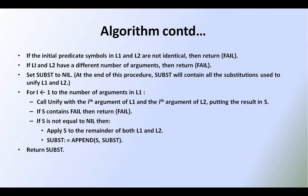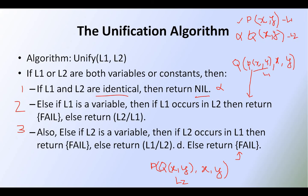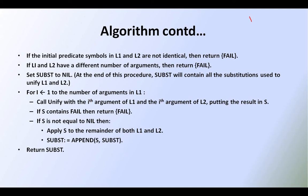The next rule: if the initial predicate symbols of L1 and L2 are not identical — for example, P of X comma Y as L1 and Q of X comma Y as L2 — these two symbols are not identical. One is P and the other is Q, both are not identical. Then also return fail.